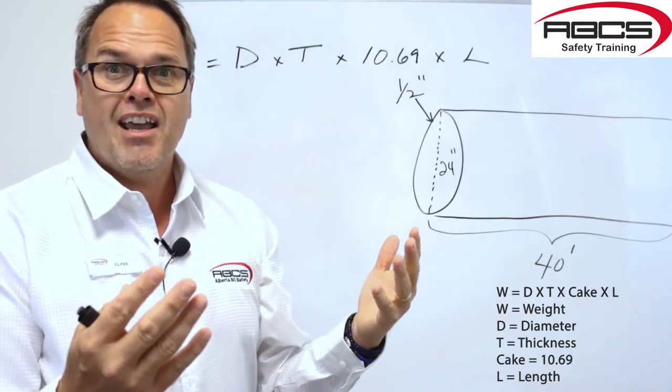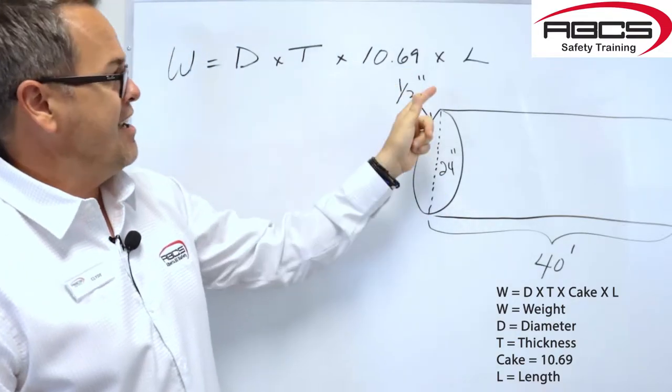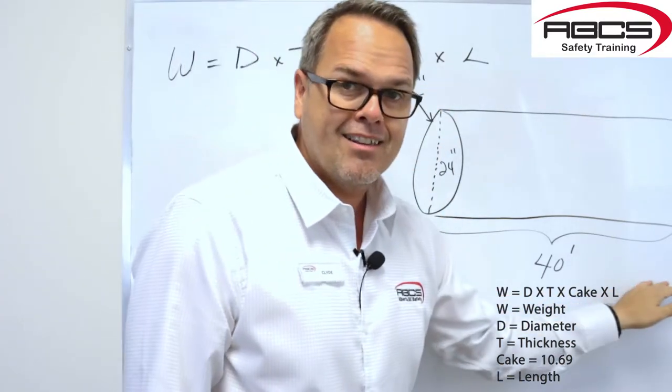Everyone seems to remember pi, 3.14. This is cake, 10.69. Then you multiply that by the length of the pipe that you have.